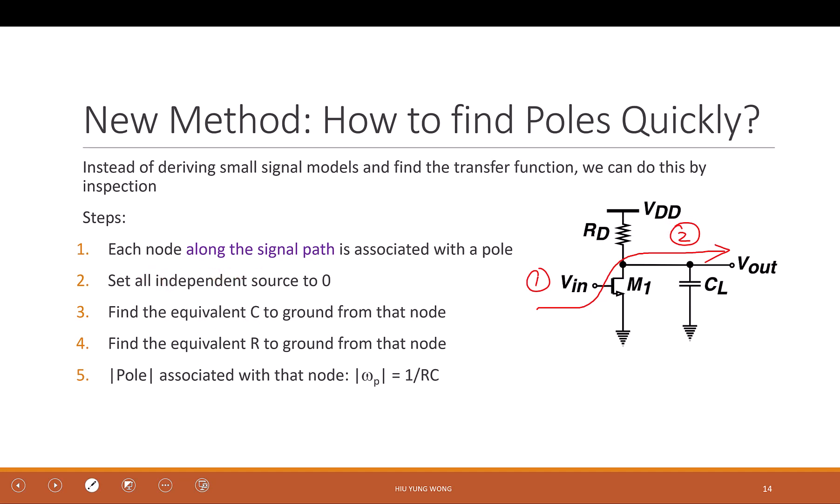The second step is set all independent source to zero, which is very natural because we're doing AC. That's what we have been doing. What are the independent sources here? VDD definitely is independent. We will set to zero. And there's one more. Vout depends on Vin, right? So actually Vin is the independent source.